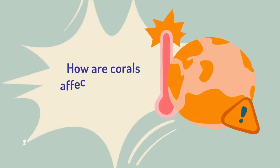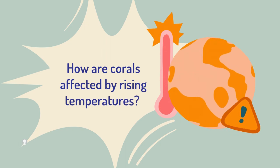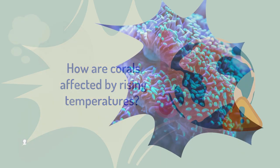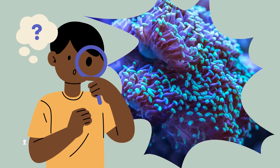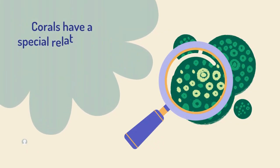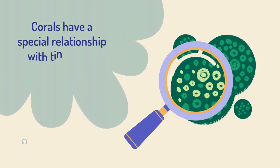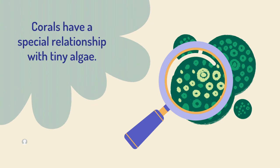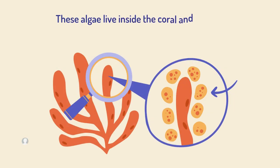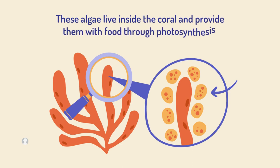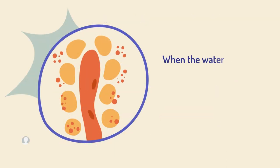How are corals affected by rising temperatures? Let's find out. Corals have a special relationship with the tiny algae in the ocean. These algae live inside the corals and provide them with food through a process called photosynthesis. When the water gets too warm,